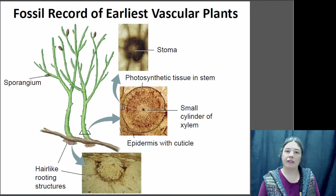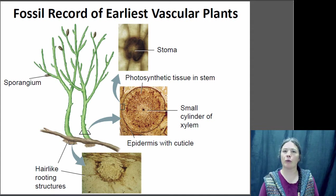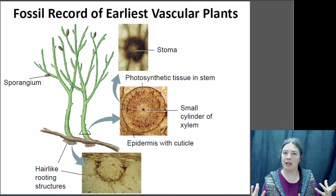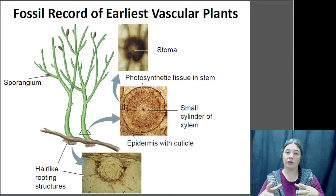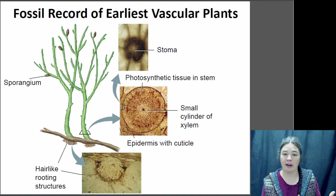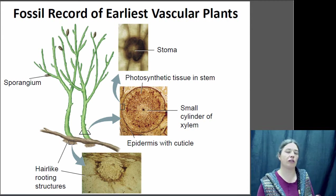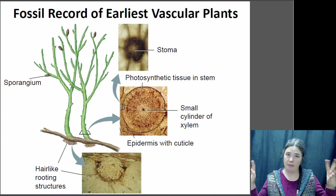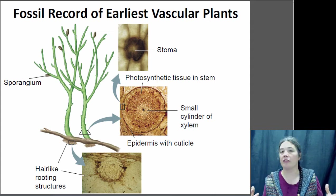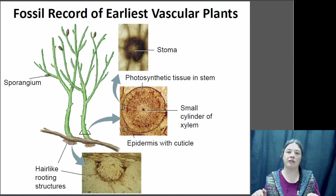Now we're going to move on into the vascular plants. The earliest vascular plant was probably a very simple plant without many leaves or true roots, but we do have fossils of these very early vascular plants. They were the first to have stomata with guard cells, so they were able to regulate gas exchange better than the bryophytes. They also had more advanced vascular tissue — we have fossilized xylem tissue — and they started to get root-like structures, though not true roots, since true roots require vascular tissue.